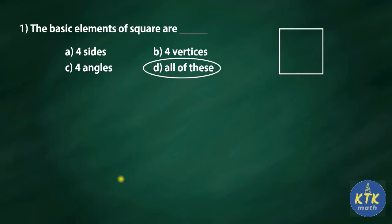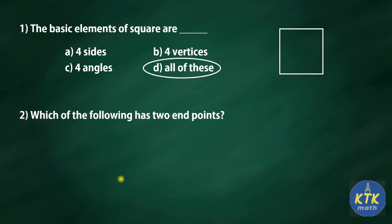So whenever we are attending objective type questions, kindly go through all four options, because sometimes all of the options may be correct. The answer for the first question — the basic elements of a square: it has four sides, four vertices, four angles — therefore your answer is all of these.